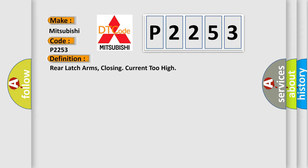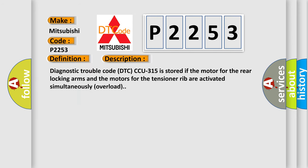The basic definition is rear latch arms closing current too high. And now this is a short description of this DTC code.